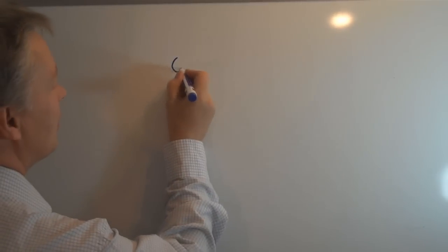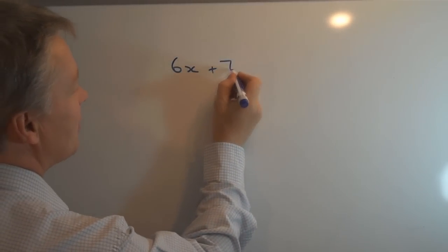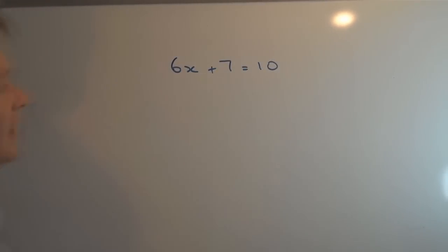In this video we're going to start talking about linear equations. That means equations which are presented where you've got some numbers and the value of x, and they want you to work out the value of x. So it could be something like this: 6x + 7 = 10.